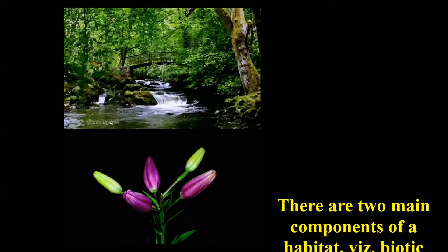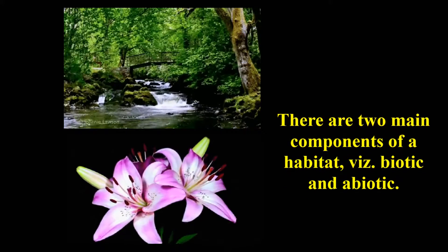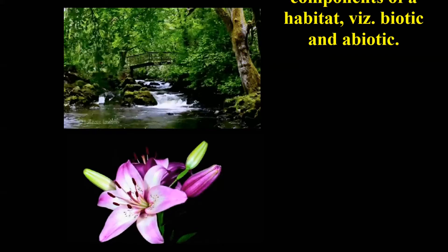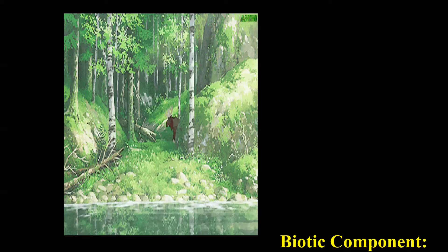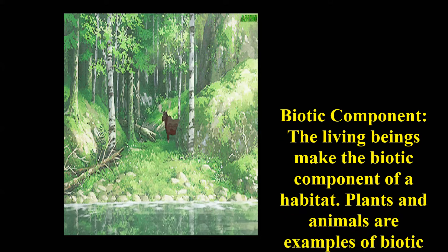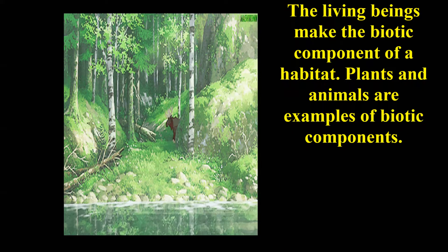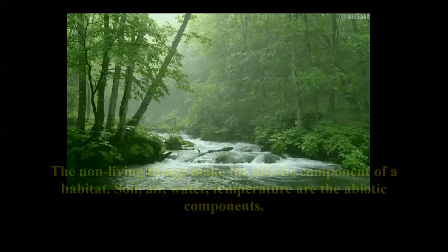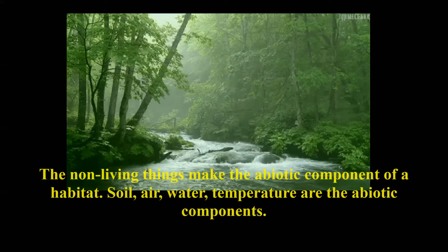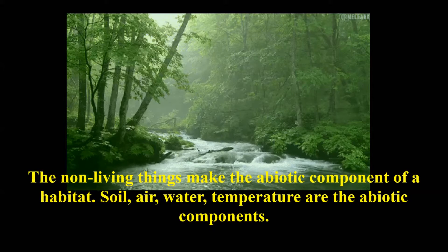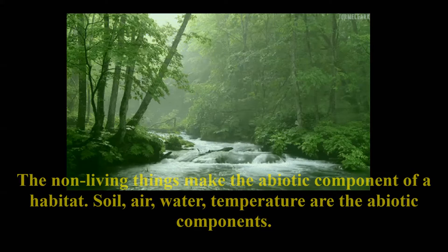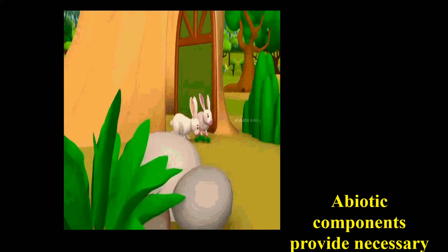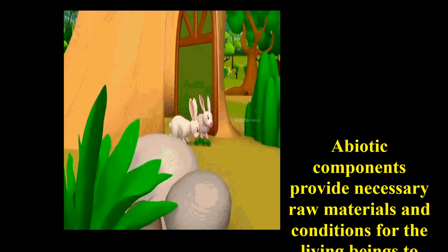The components of these habitats come under two categories: biotic and abiotic. Biotic components are the living beings that make up the habitat — plants and animals are examples of biotic components. Abiotic components are the non-living things that make up a habitat, such as soil, air, water, and temperature.